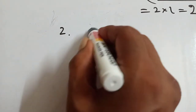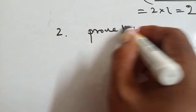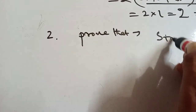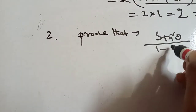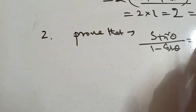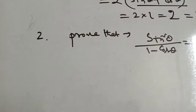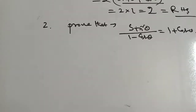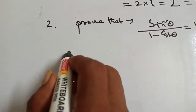Prove that: sin squared theta divided by 1 minus cos theta equals 1 plus cos theta.